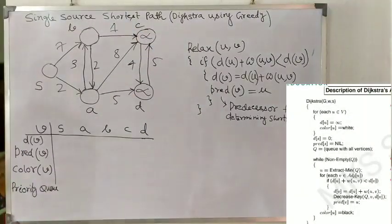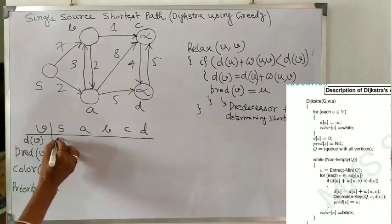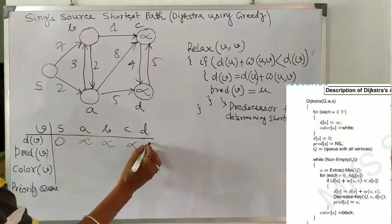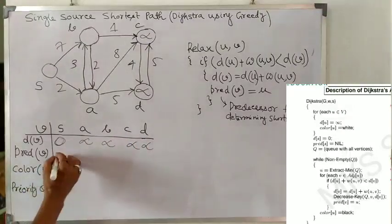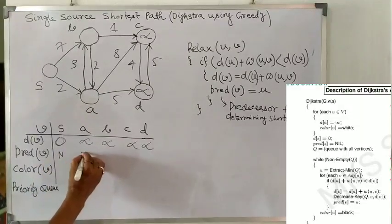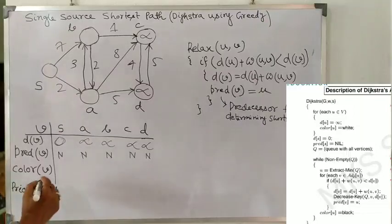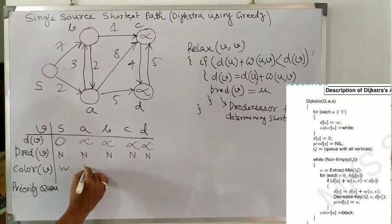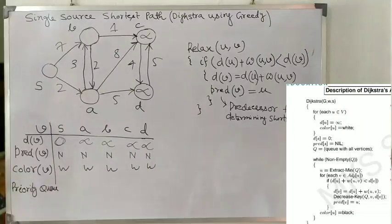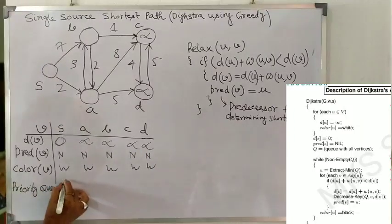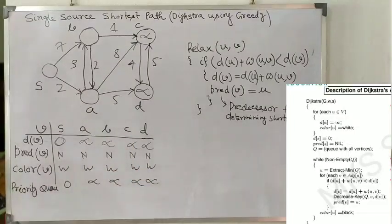First, we have to assign all the vertices except the source ds, because ds is 0 and all other vertices have infinity value. At the same time, the predecessor has no predecessor — that means all are assigned as nil value, N for nil. And the color of v is initially white. The priority queue contains source as 0 and all others as infinity. This is our first step — the initialization part.